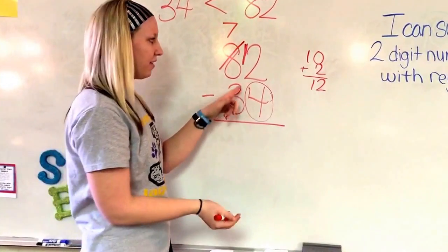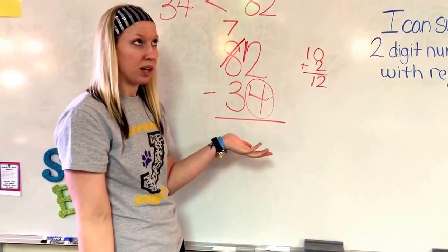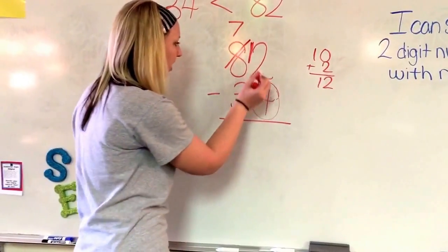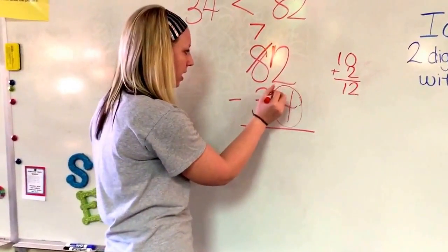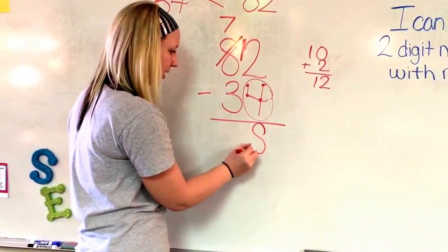And I know if I add a ten to my two, it makes twelve. So look, now I have twelve. If I have twelve things, can I take four things away now? I can. Twelve minus four. Eleven, ten, nine, eight. And I got my answer.